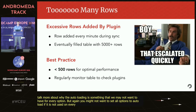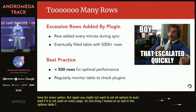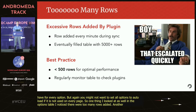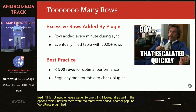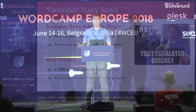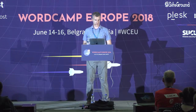One thing I also noticed in the options table was that there were too many rows added. Another popular WordPress plugin had added over 5,000 temporary rows of options — it added a new row every minute during a sync. But because of a bug in the plugin, it never deleted those rows. Over time, it filled up the table and we had a huge WordPress options table.